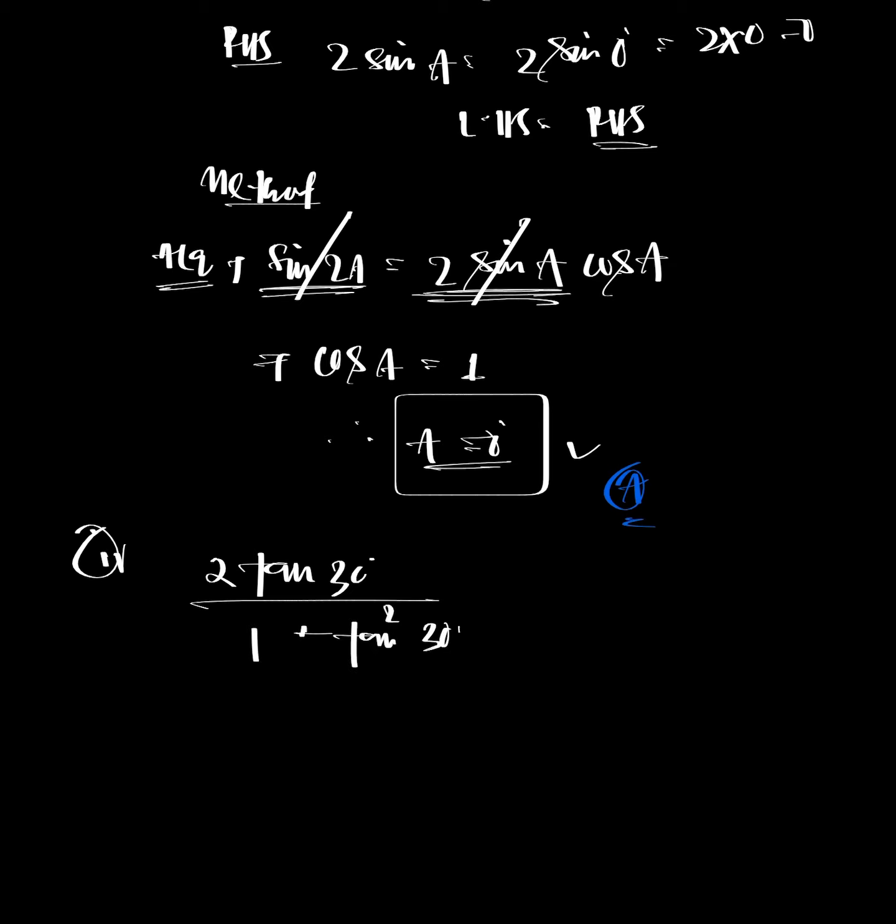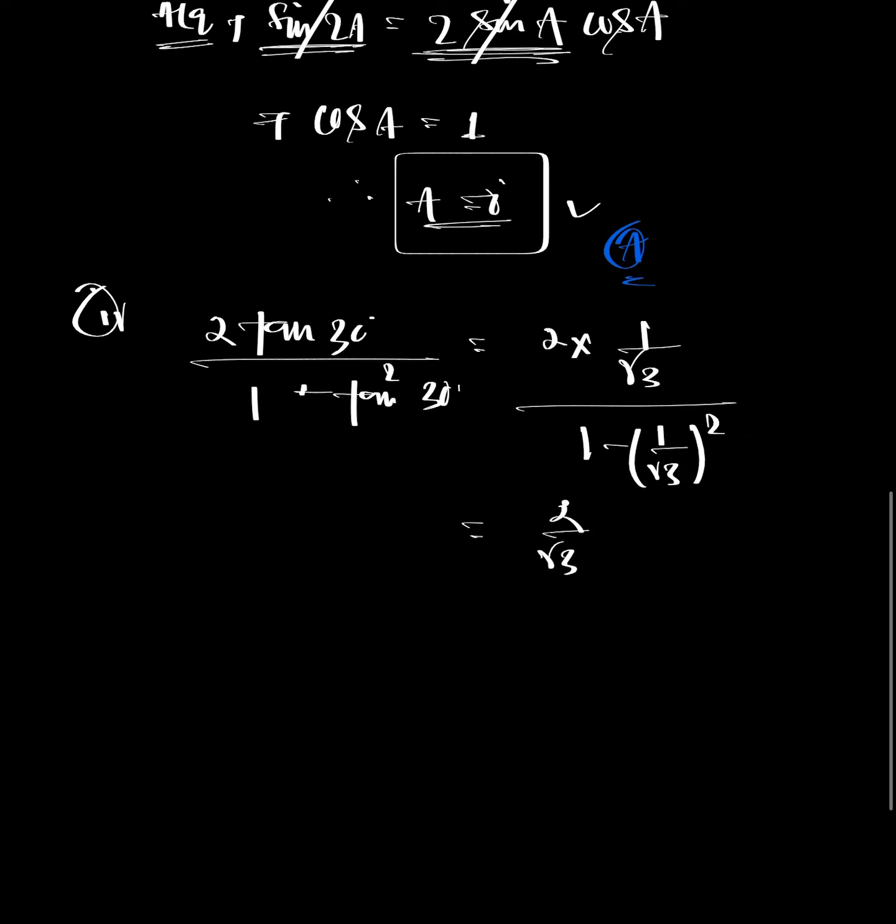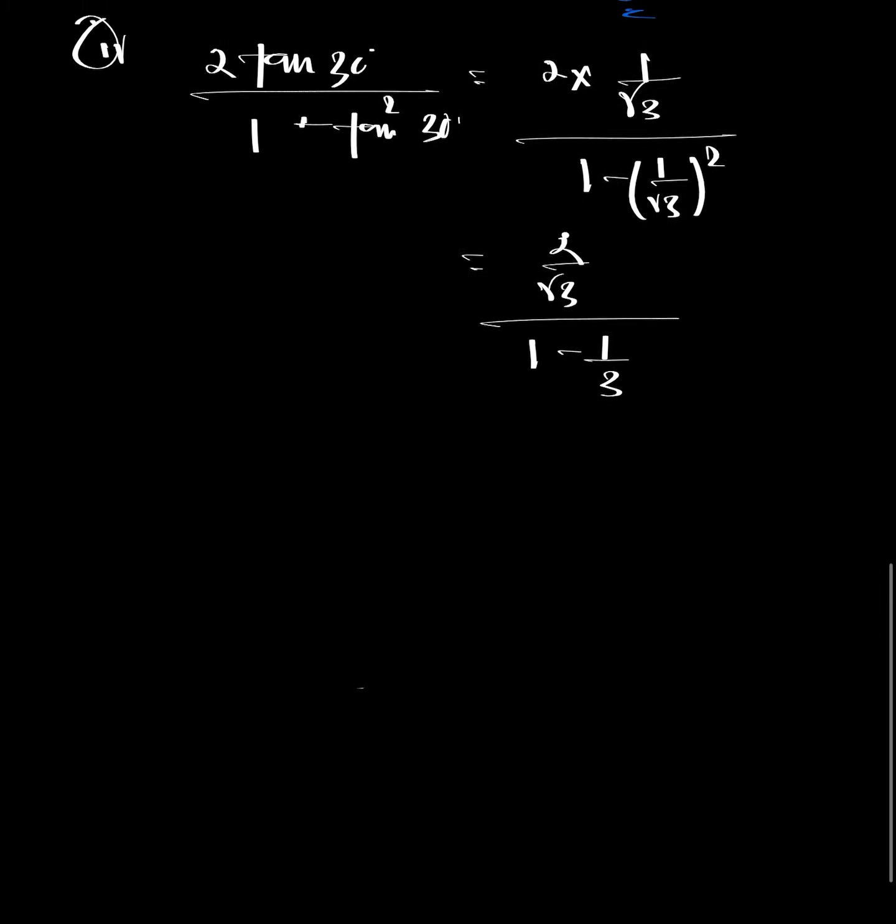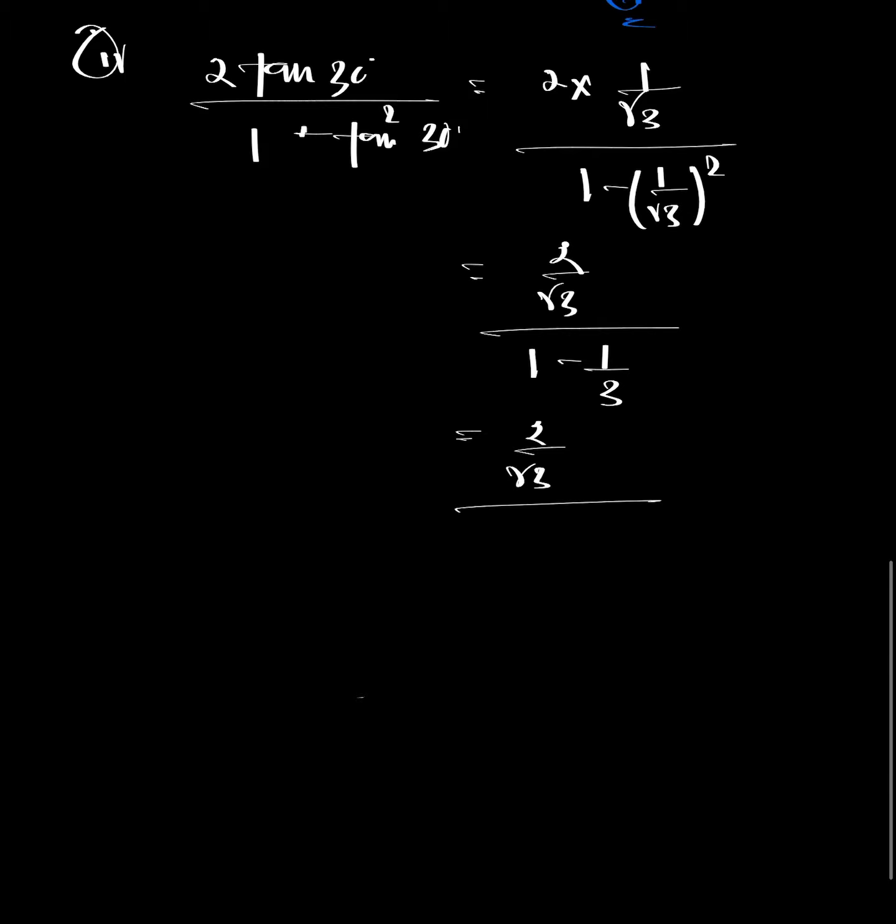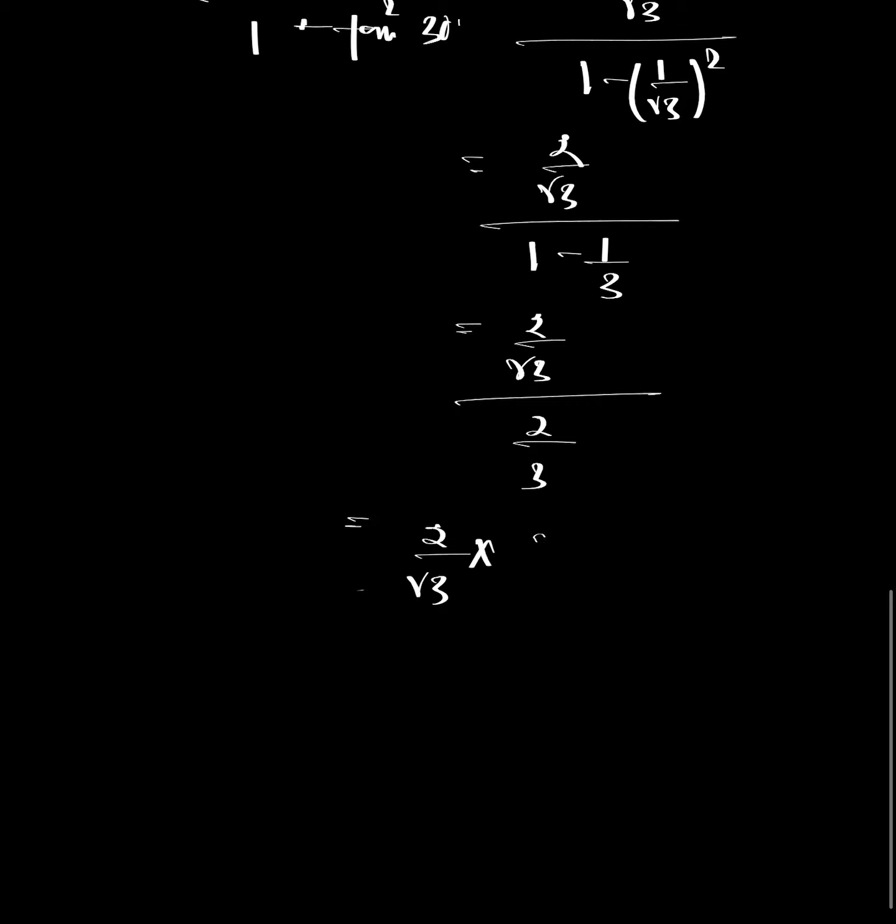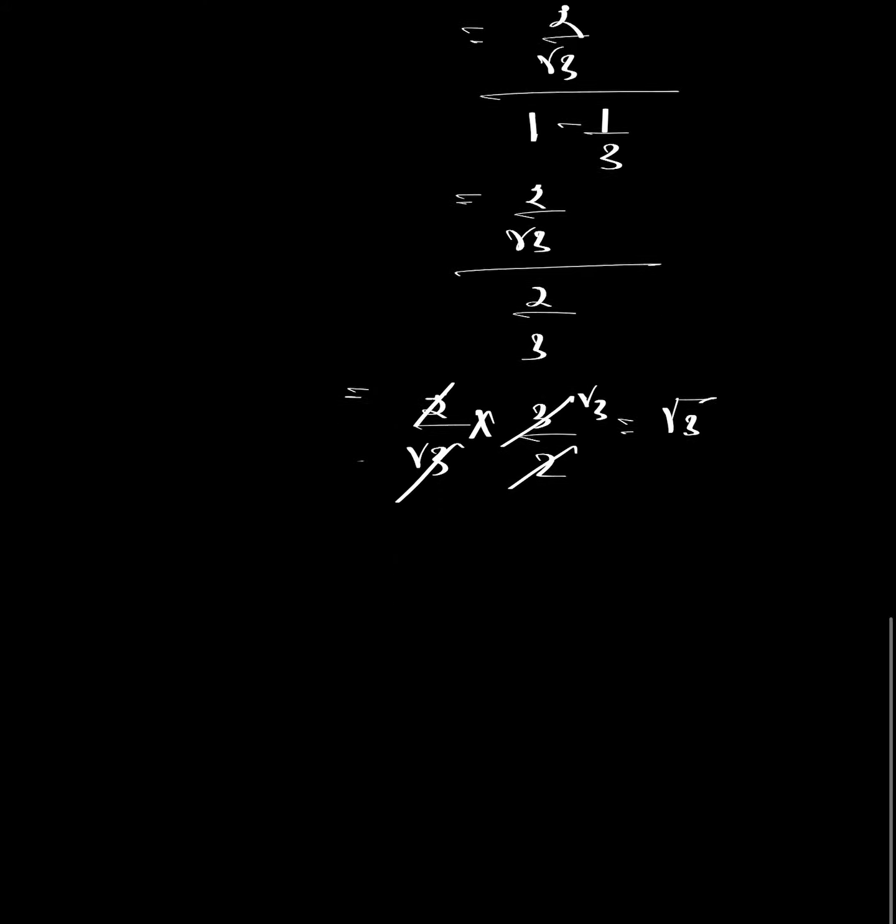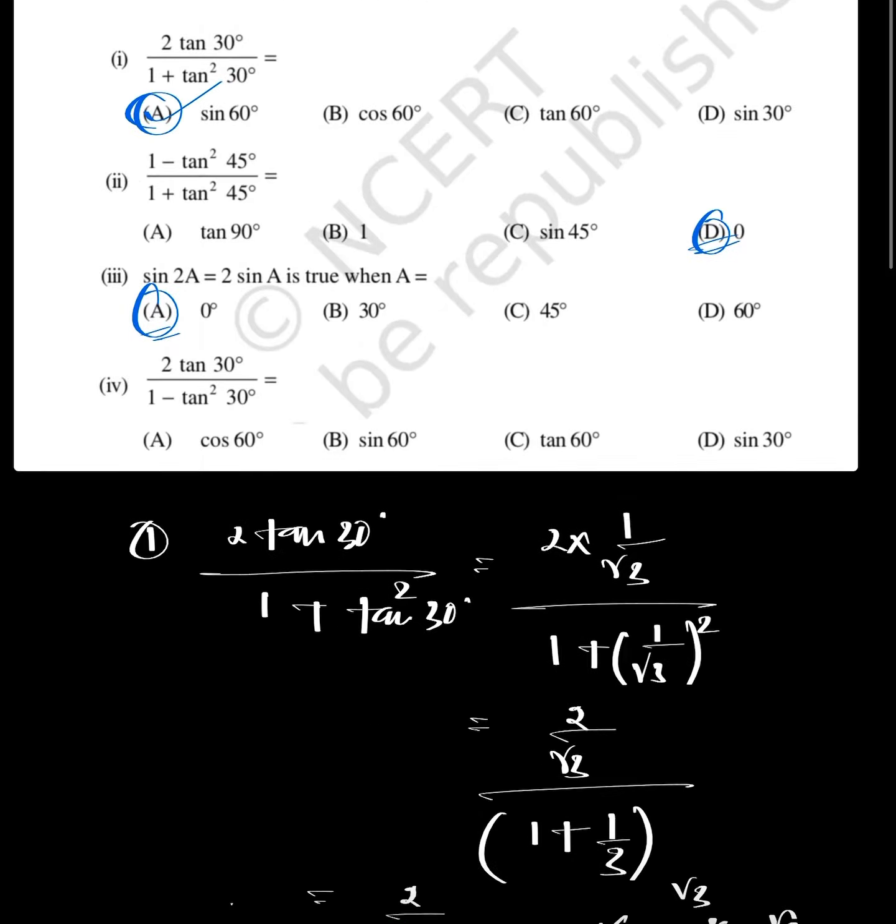Fourth problem: 2 tan 30° divided by 1 minus tan² 30°. Substituting tan 30° equals 1 by root 3, we get 2 by root 3 divided by 1 minus 1 by 3, which equals 2 by root 3 divided by 2 by 3, giving root 3.